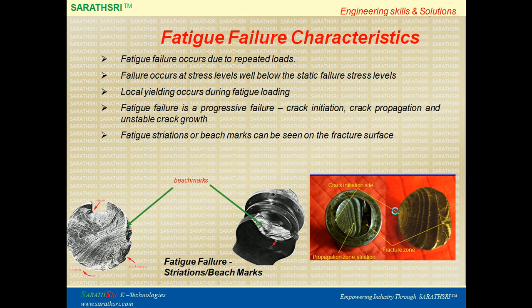Fatigue failure characteristics: fatigue failure can happen due to repeated fatigue loading at stresses well below the static failure stress levels. Local yielding occurs during fatigue loading, creating two types of approaches: stress-based and strain-based. In this talk, the stress-based approach is discussed. The fracture surface shows smooth striations or beach marks in the crack initiation and propagation zones, and then a rough surface in the final fracture zone.